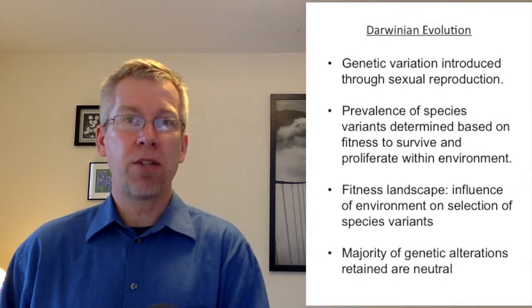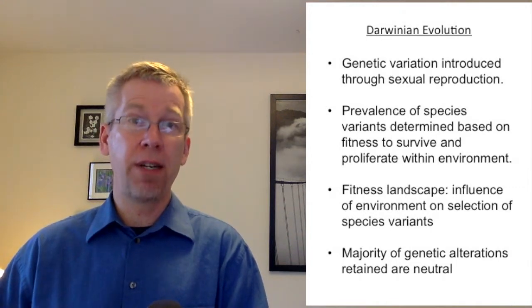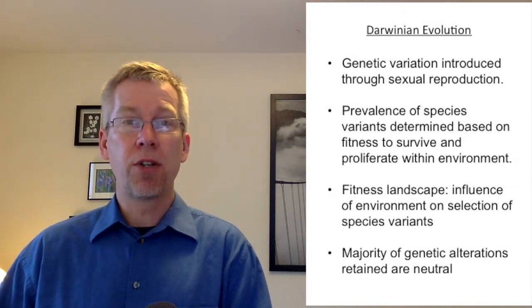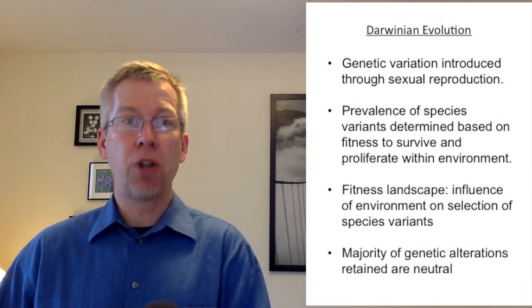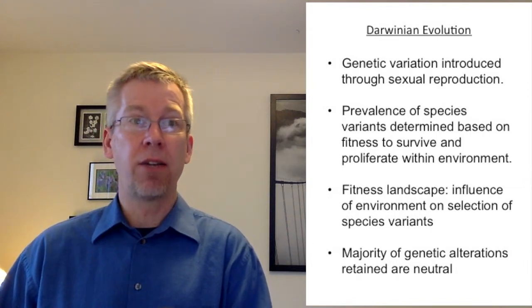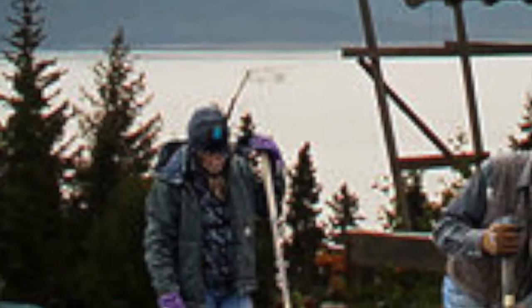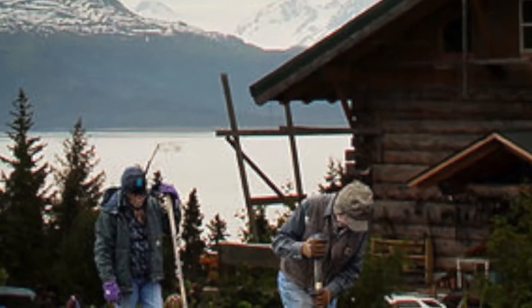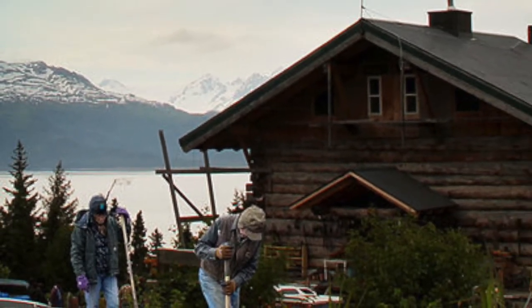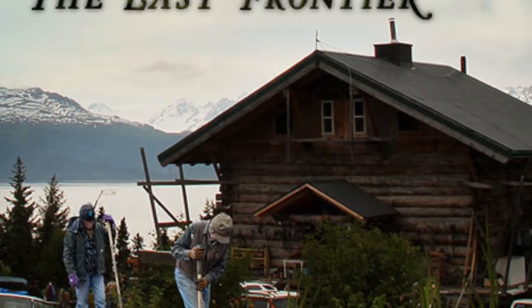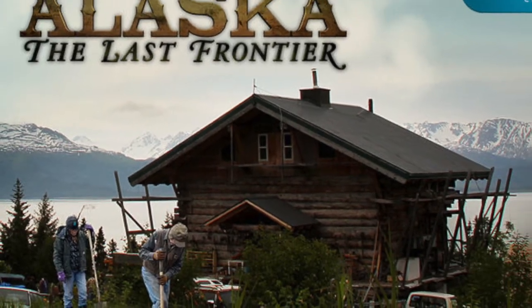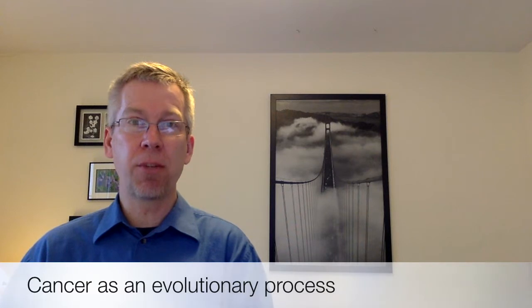We express this using the term fitness landscape. The majority of genetic alterations have a neutral effect on the survival of the individual, while detrimental variants are lost. A mental model for Darwinian evolution may be the survival across generations of humans in a hostile environment like the Alaskan wilderness.